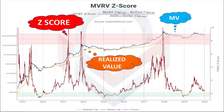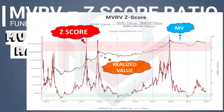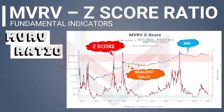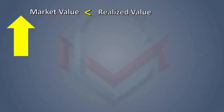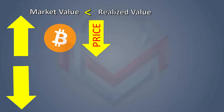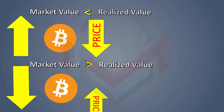The mean value between market value and realized value is the Z-Score, represented as a red line. When the Z-Score is elevated, the market value is much higher than the realized value. If you look at the Z-Score and it is low, you will find a chance that the price of Bitcoin may move higher.